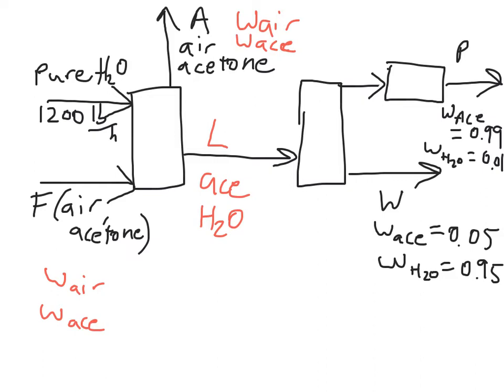At this point, we go ahead and consult the problem statement that tells us that this stream right here, the stream that's being fed to the distillation column, is 0.5 weight fraction of acetone. So we know that W_acetone is 0.5, and since the balance is water, W_H2O is also 0.5.